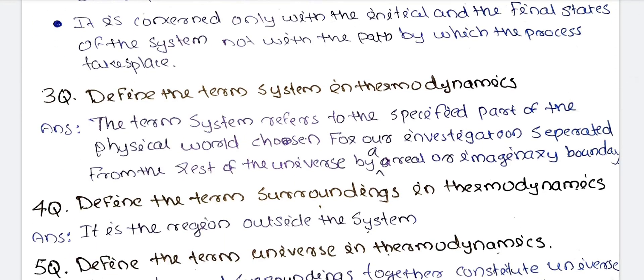Define the term 'system' in thermodynamics. The term system refers to the specific part of the physical world chosen for our investigations, separated from the rest of the universe by a real or imaginary boundary. That is, when we do thermodynamic experiments, we take a particular portion to study — that is called the system.